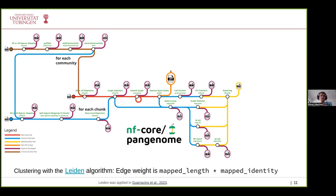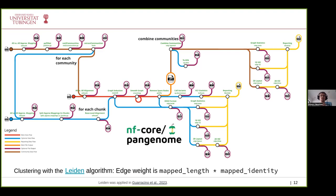Another interesting feature is community detection. When you have an organism with, say, eight chromosomes and input all sequences without knowing which belongs to which chromosome, the pipeline can determine this automatically. We do an all-versus-all approximate mapping, translate it into a network, and apply the Leiden clustering algorithm to detect communities. We expect eight communities when inputting eight chromosomes. For each community we then execute the whole workflow, and once all runs are complete, we combine them back into one large graph and calculate statistics and visualizations of the final graph.